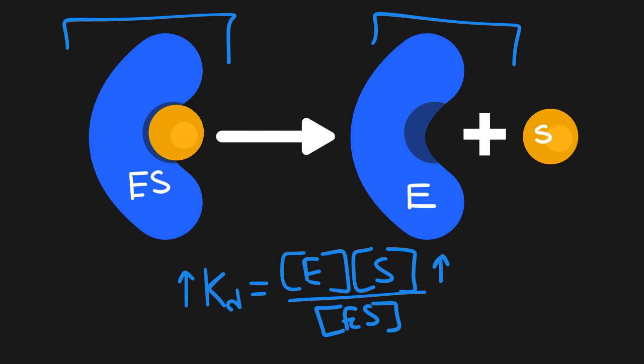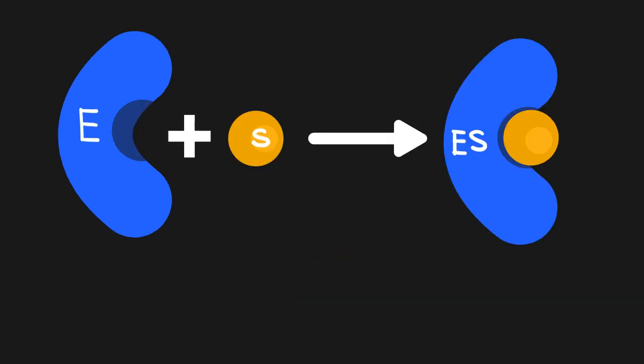Here we can see the importance of paying attention to the equilibrium constant subscript. In this particular case, the D in KD refers to the dissociation constant. So as the KD value increases, so does the dissociation.